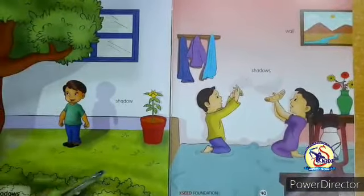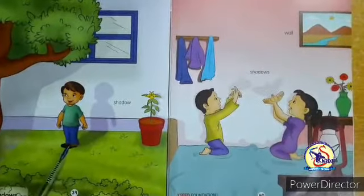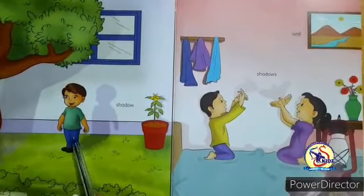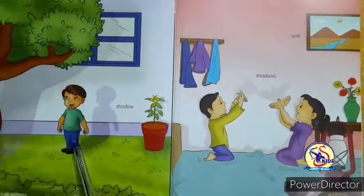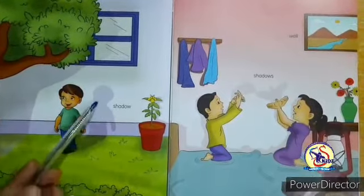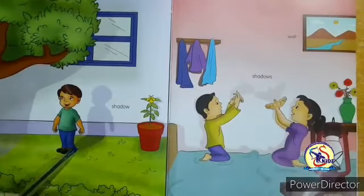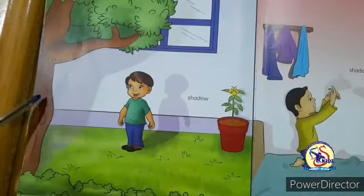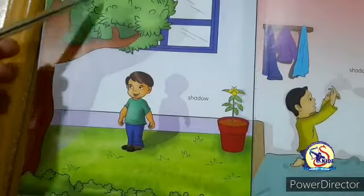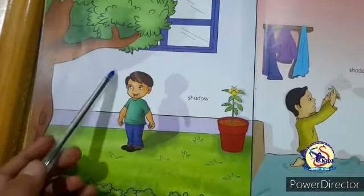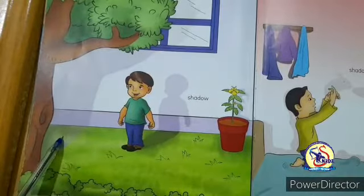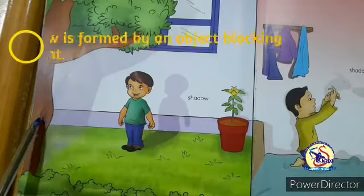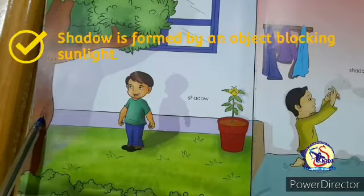Now look here, this is a garden scene. This boy is standing outside in sunlight, and this is the shadow of the boy. Now look here, this is a big tree, and this is the shadow of the tree. This shadow is formed by the tree by blocking sunlight.